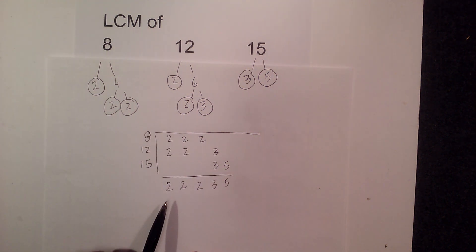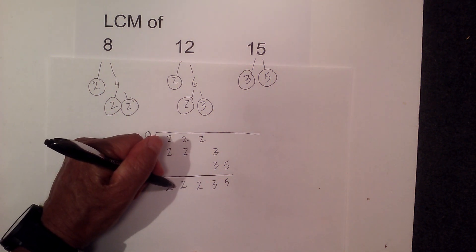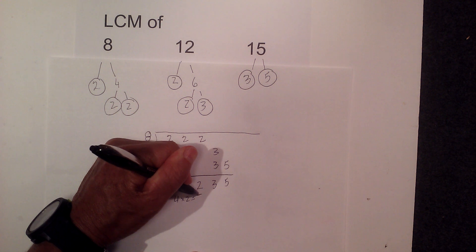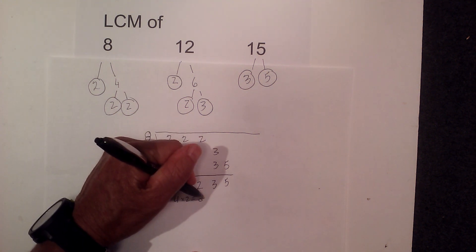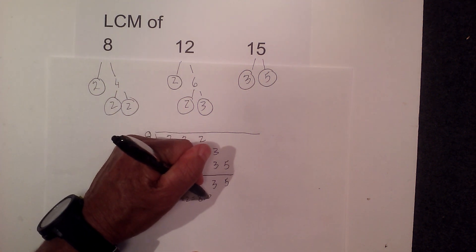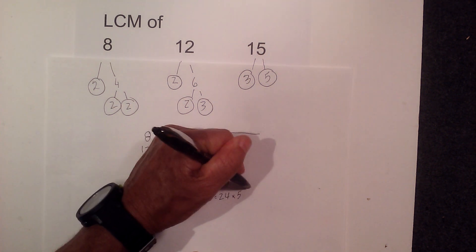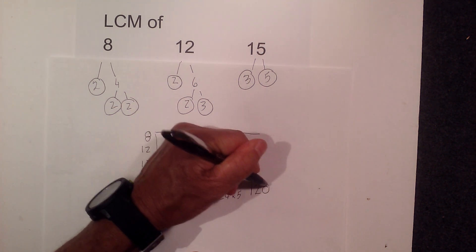Now all I do to find the least common multiples, multiply these together. 2 times 2 is 4. 4 times 2 is 8. 8 times 3 is 24. 24 times 5 is 120.